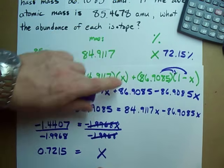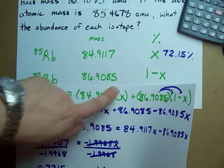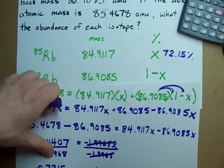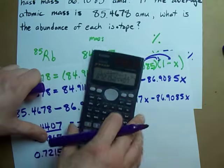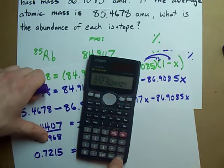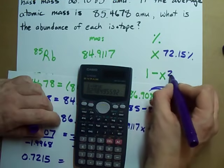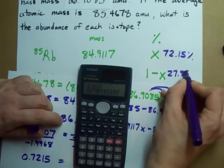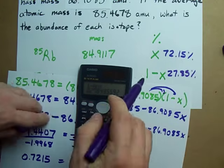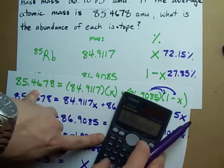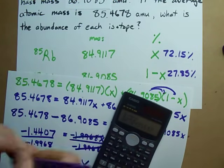And the isotopic abundance of RB87 is 1 minus that number. 1 minus that number turns out to give me 27.85%. You could have just as easily done 100% minus 72.15%. But my way was fine too.